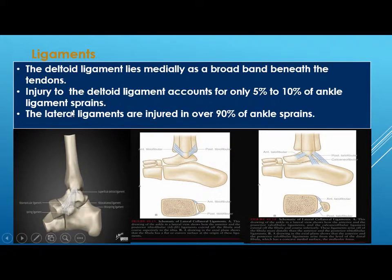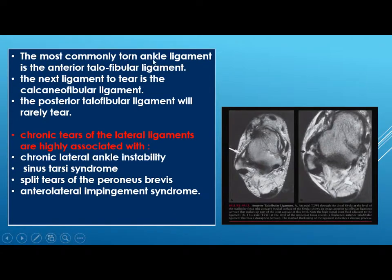The ankle ligaments: medially there is the deltoid ligament, fan-shaped, injured in only 5 to 10 percent of ligament sprains. Lateral ligaments are injured in 90 percent of ankle sprains. The lateral complex has superior and inferior parts: the superior has anterior and posterior tibiofibular ligaments, and the inferior has anterior talofibular, posterior talofibular, and calcaneofibular ligaments. The most commonly torn ligament is the anterior talofibular, followed by the calcaneofibular. The posterior talofibular rarely tears. Chronic lateral ligament tears are associated with chronic lateral ankle instability, sinus tarsi syndrome, peroneus brevis split tear, and anterolateral impingement syndrome.